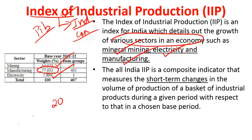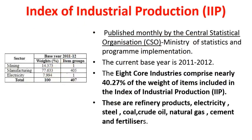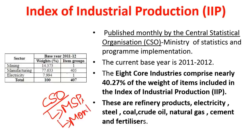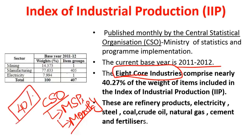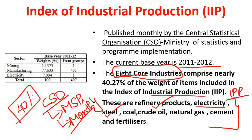The current base year for this Index of Industrial Production is 2011-12. This index measures only short-term changes across a basket of industrial products and is published by the Central Statistical Organization, which comes under the Ministry of Statistics and Programme Implementation. It is published on a monthly basis. There are eight core industries with respect to IIP, contributing 40% of its total weightage. In descending order of weightage, they are: refinery products, electricity, steel, coal, crude oil, natural gas, cement, and fertilizers.